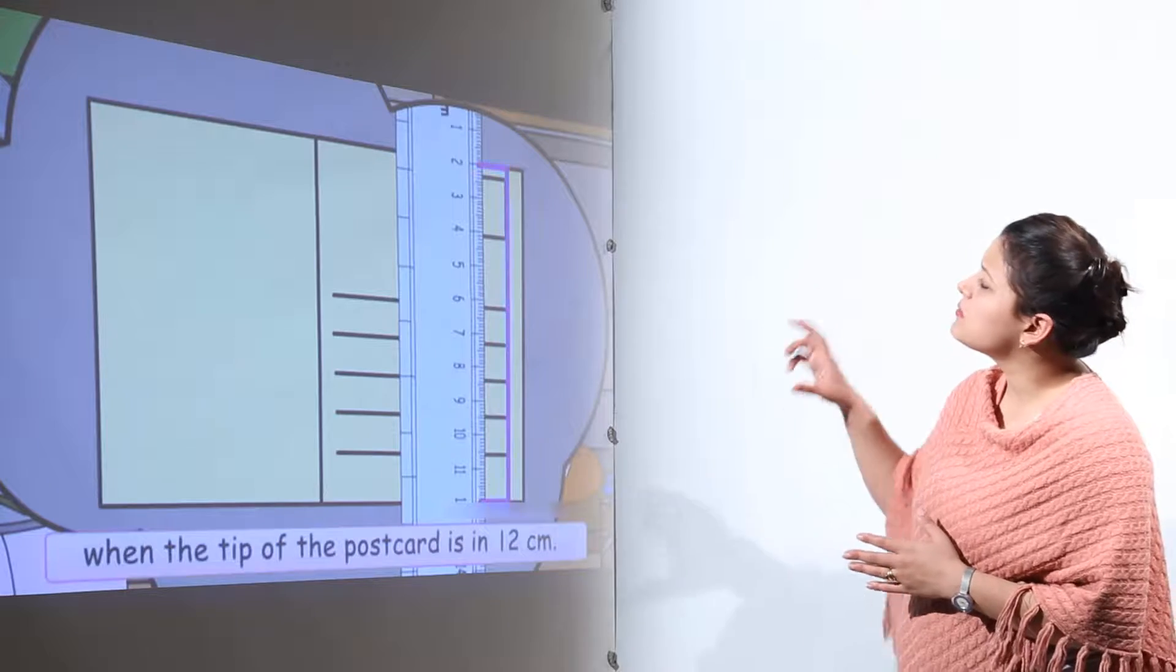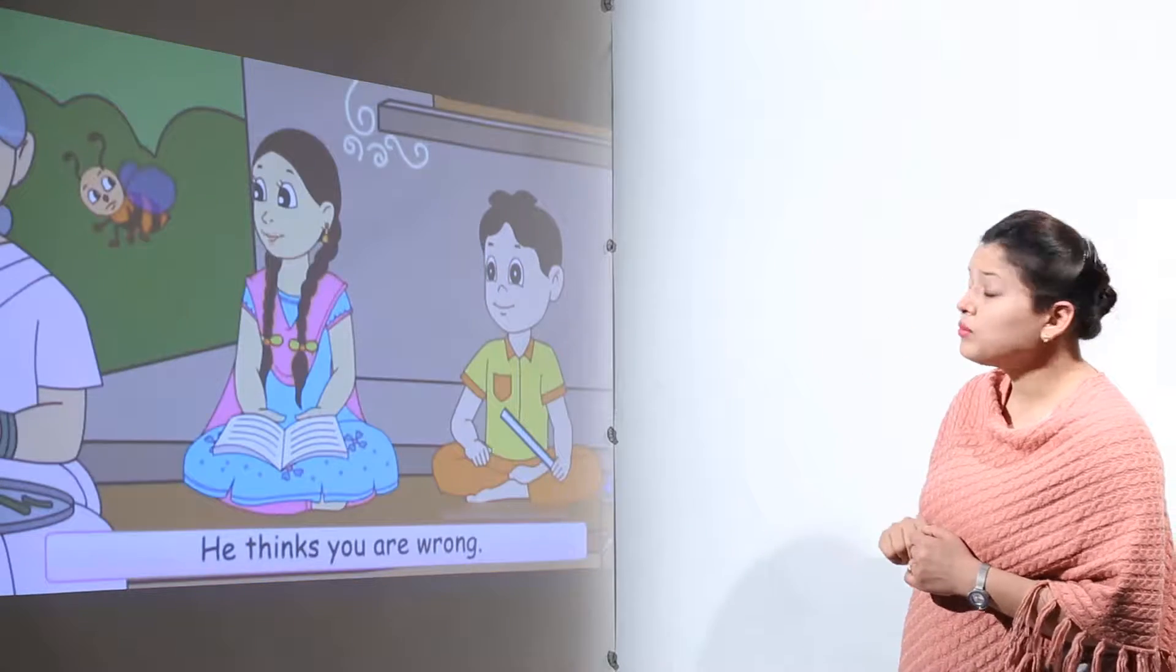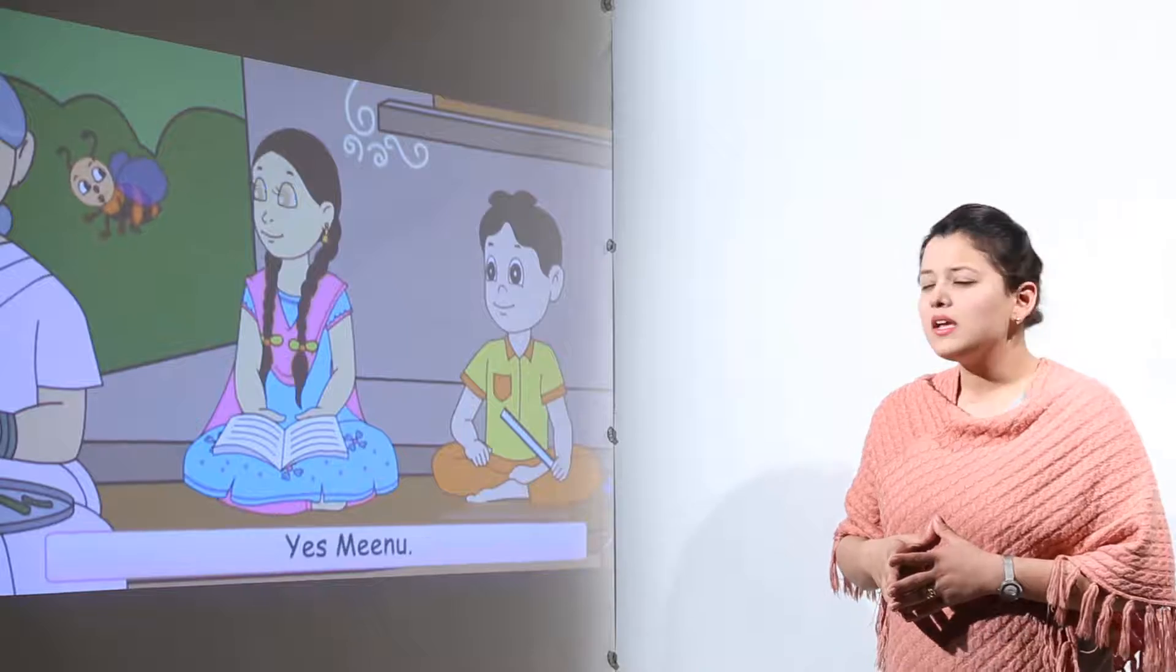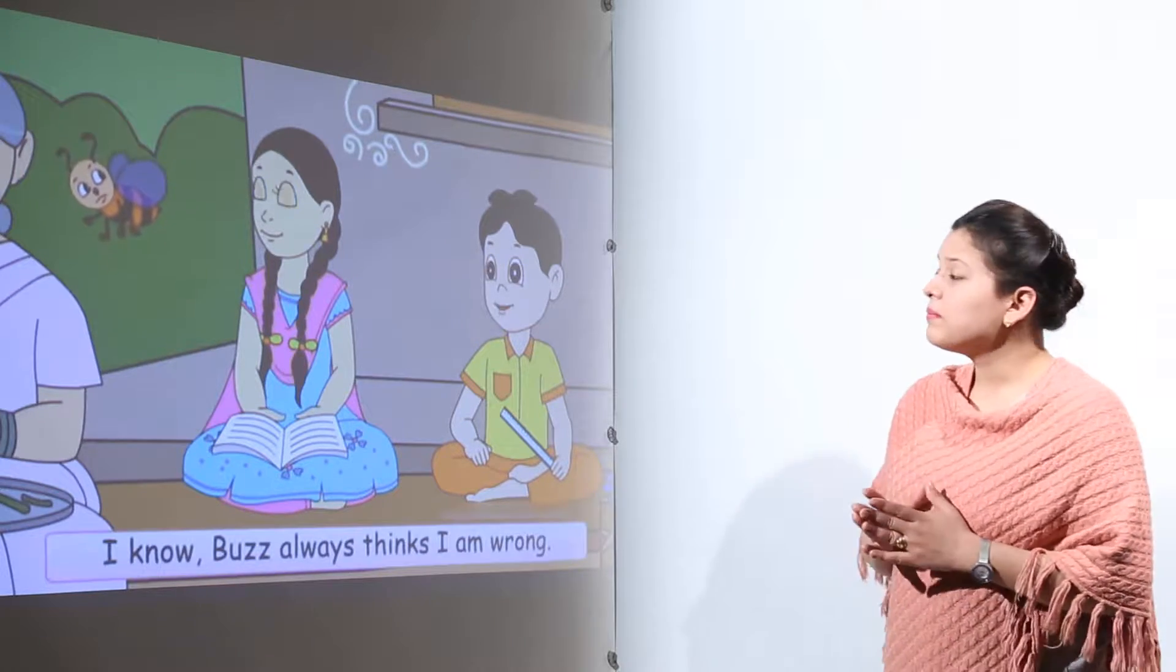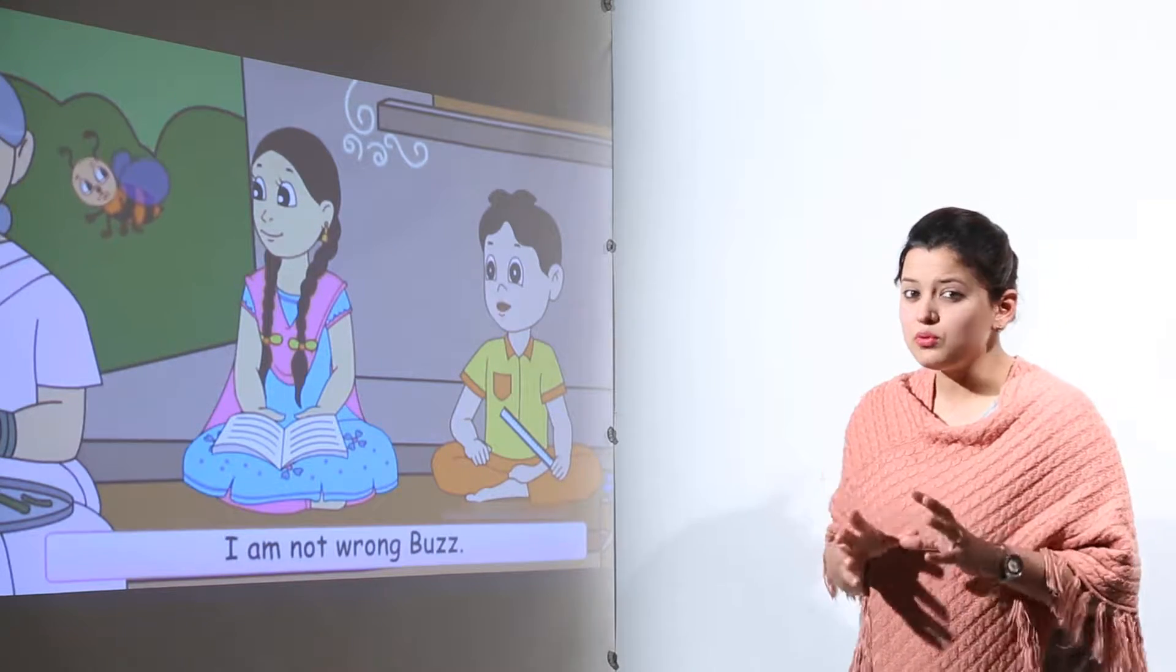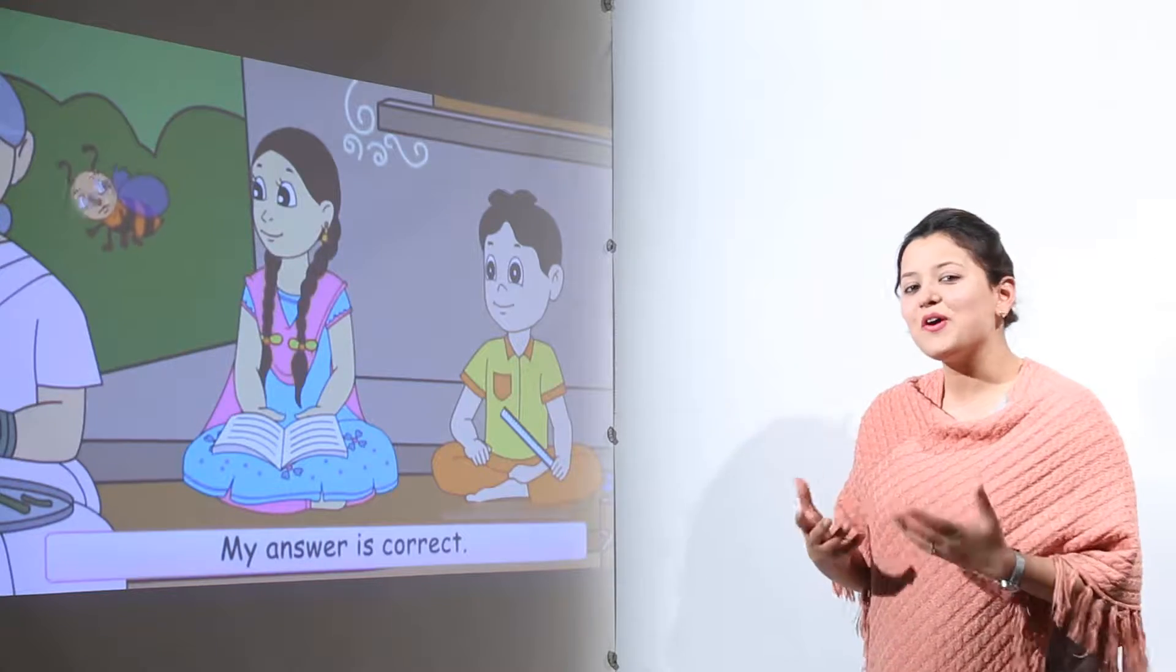But how is it possible? She started measuring from 2 up to 12. It came out 10 centimeters. Yes, because Buzz was a bit confused. It was to be explained. And how to explain this?